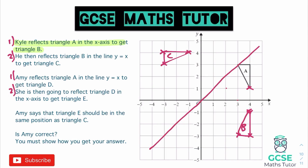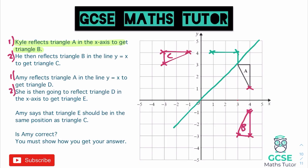Now let's look at Amy's path in another colour. Amy reflects triangle A first in the line y equals x — drawing that line back in. The top left point is already on the line so it doesn't move. The top right is half a square away, so that goes to there. The bottom point is one and a half away, so that's going to go to here. Drawing that in — that is triangle D.